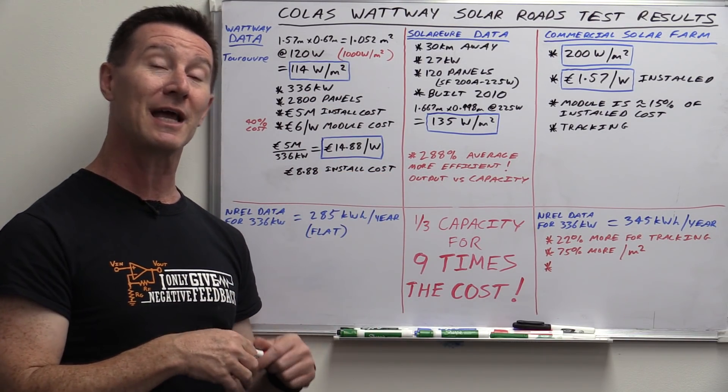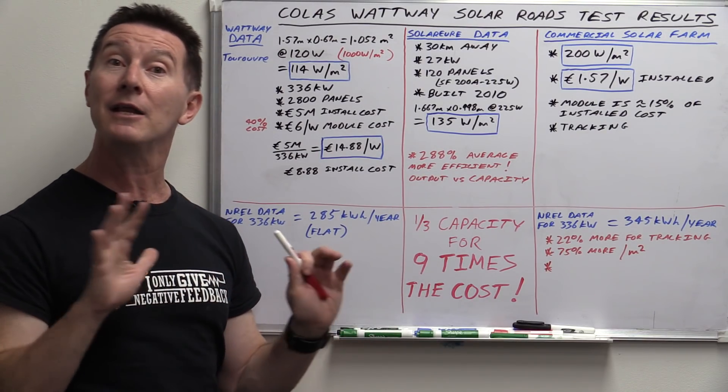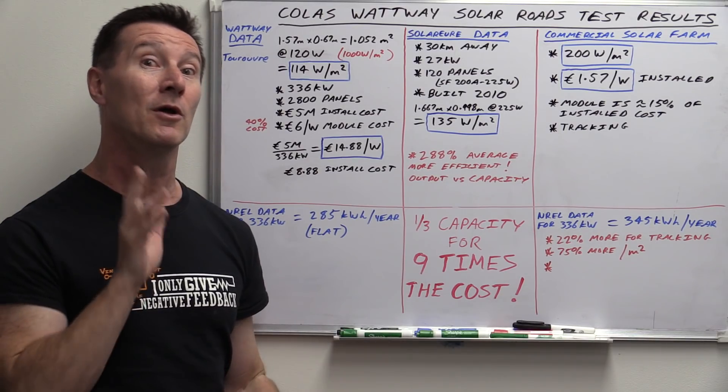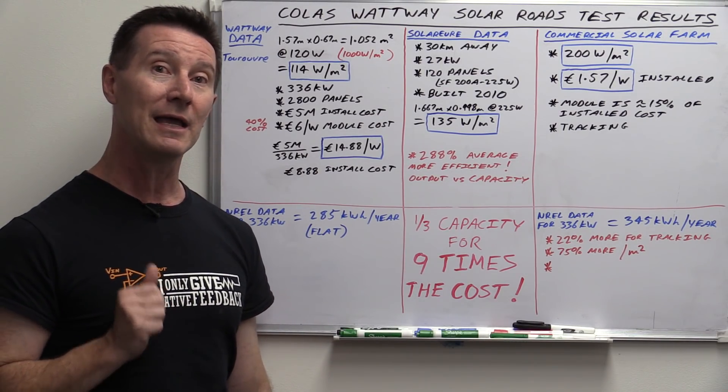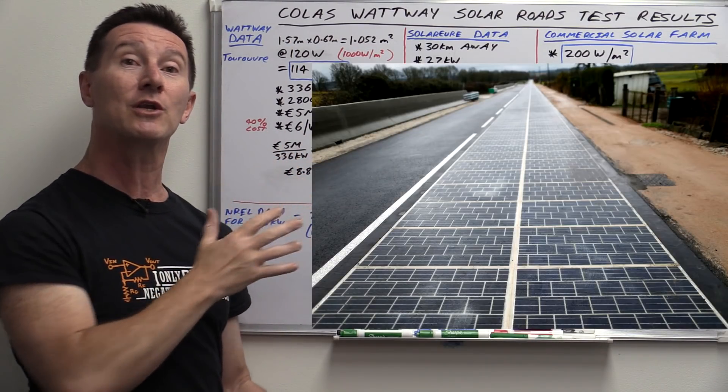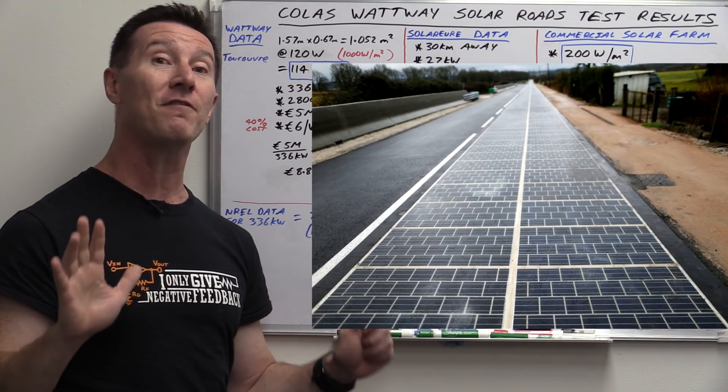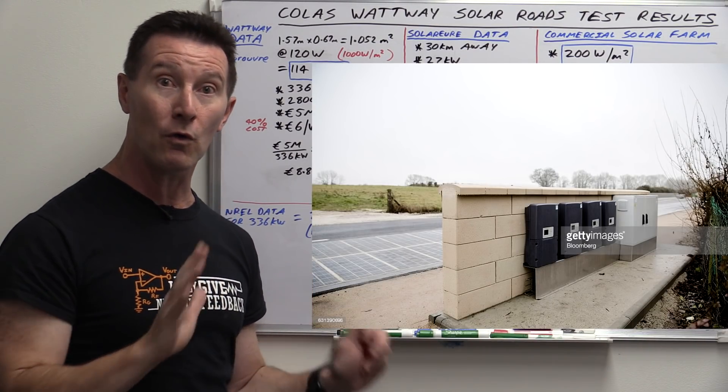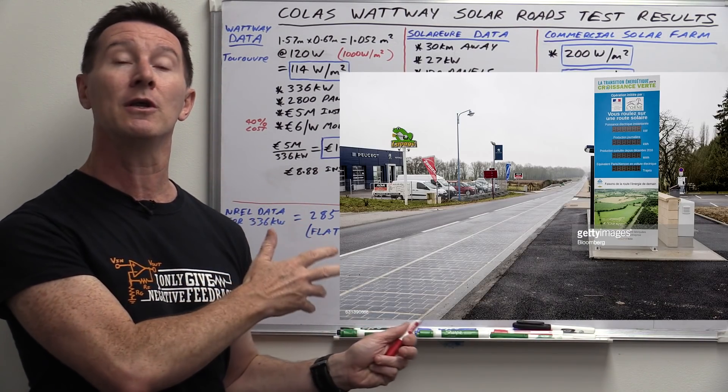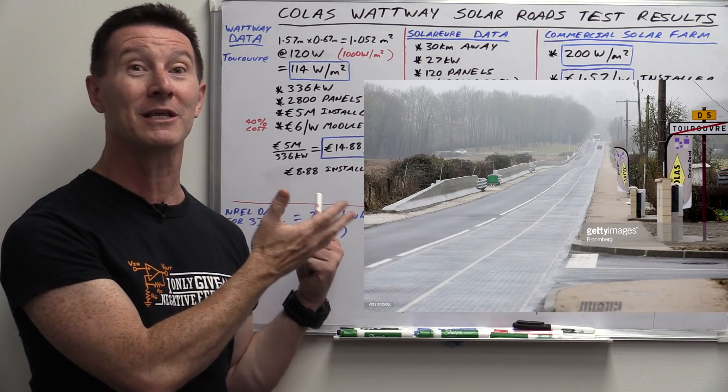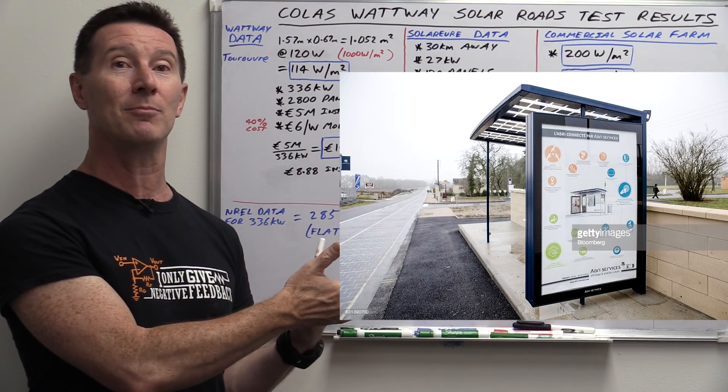Now the one we're going to take a look at today because many people have asked for this and it's only fair that we actually take a look at the test results from the world's biggest solar roadway installation. So let's take a look at it. It's the Colas Wattway project which to be fair is by far the best and most professional by an order of magnitude solution to implement solar roadways. It's actually probably as good as you can get from an engineering point of view.